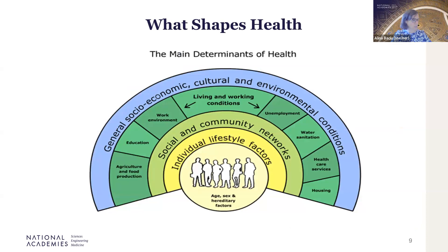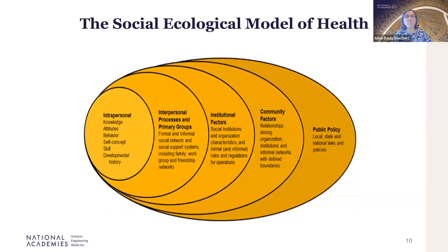We have a few different graphics of the social determinants of health and the socio-ecological model of health. In that green circle you see things like education, work environment, water and sanitation, and healthcare services — putting healthcare in the context of the broader array of factors that shape people's health. It speaks to the various levels where interventions are possible to help improve people's health.